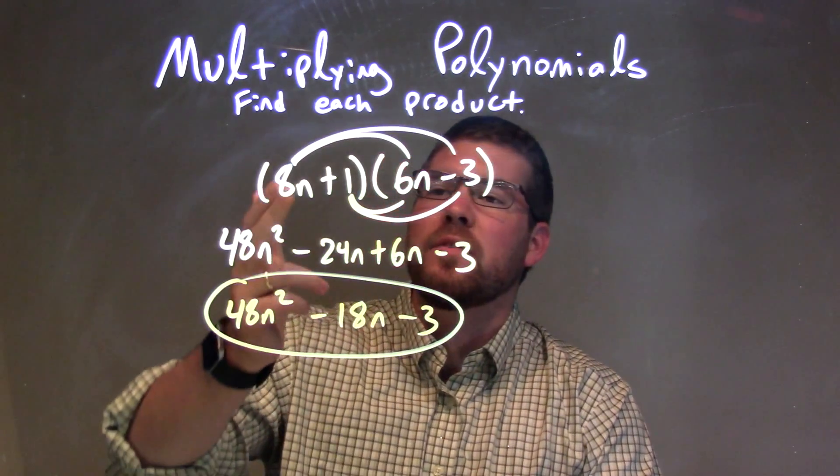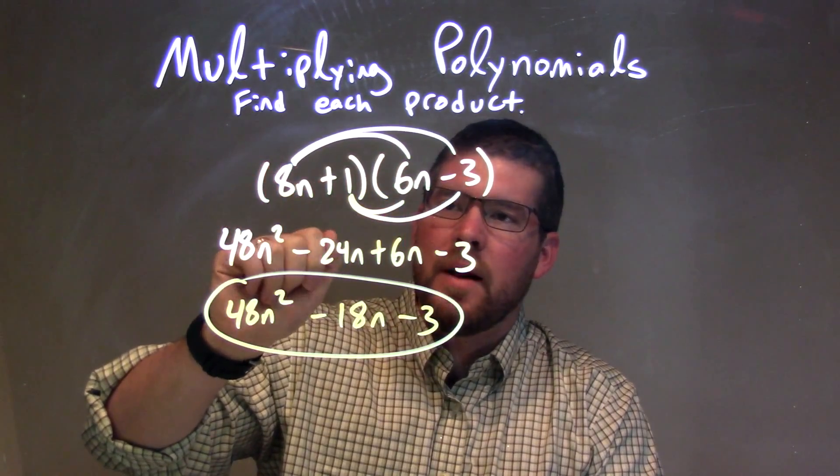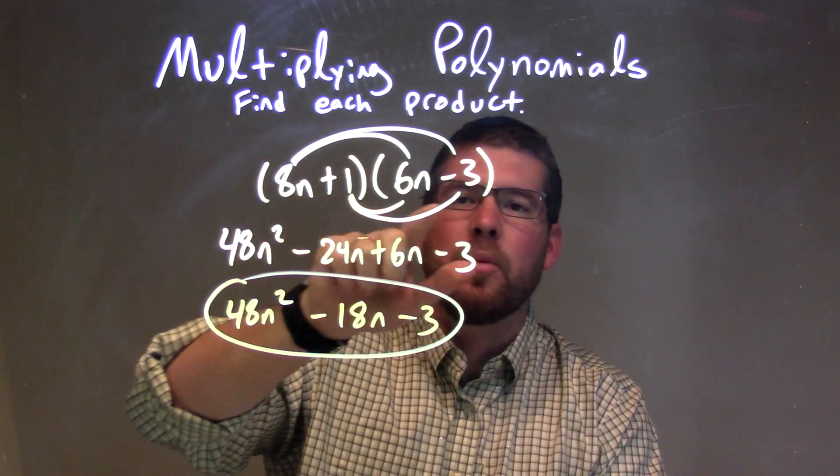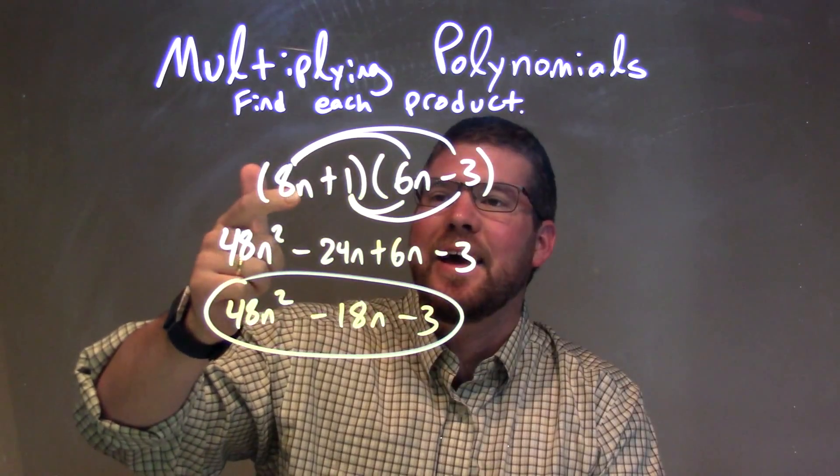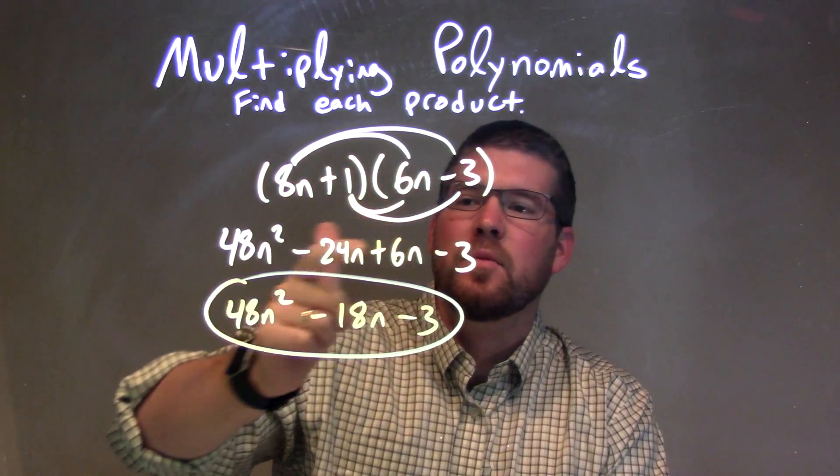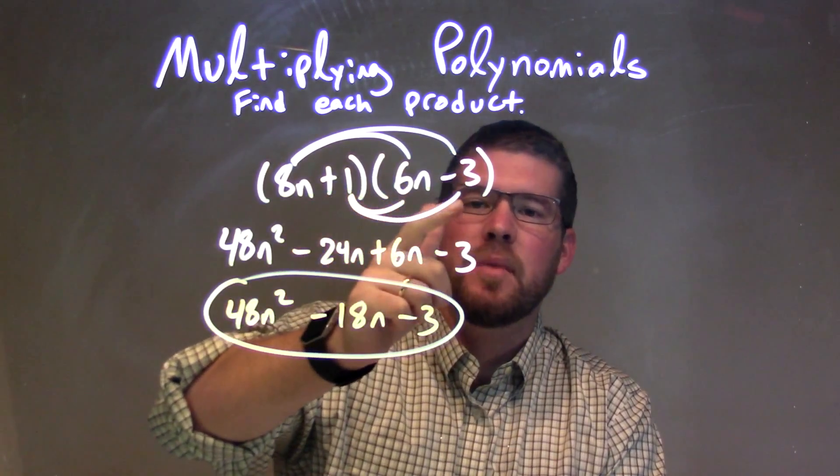Let's recap. We're given (8n + 1)(6n - 3) to multiply out. We're distributing, multiplying all parts of our first parentheses by all parts of our second. 8n times 6n is 48n². 8n times -3 is -24n. 1 times 6n is 6n, and 1 times -3 is -3.